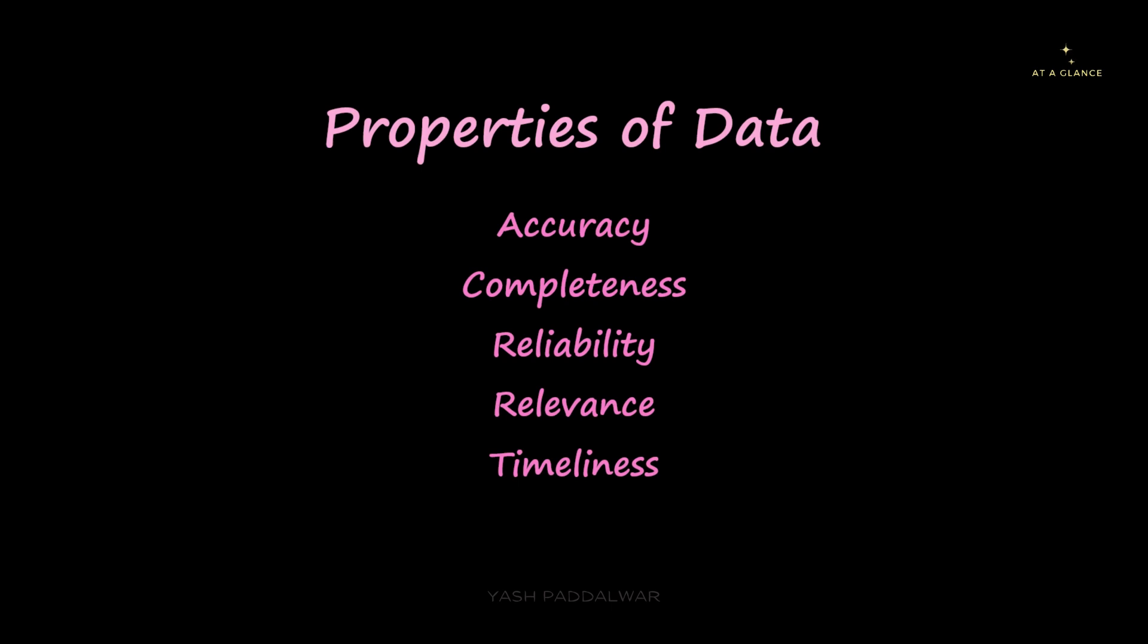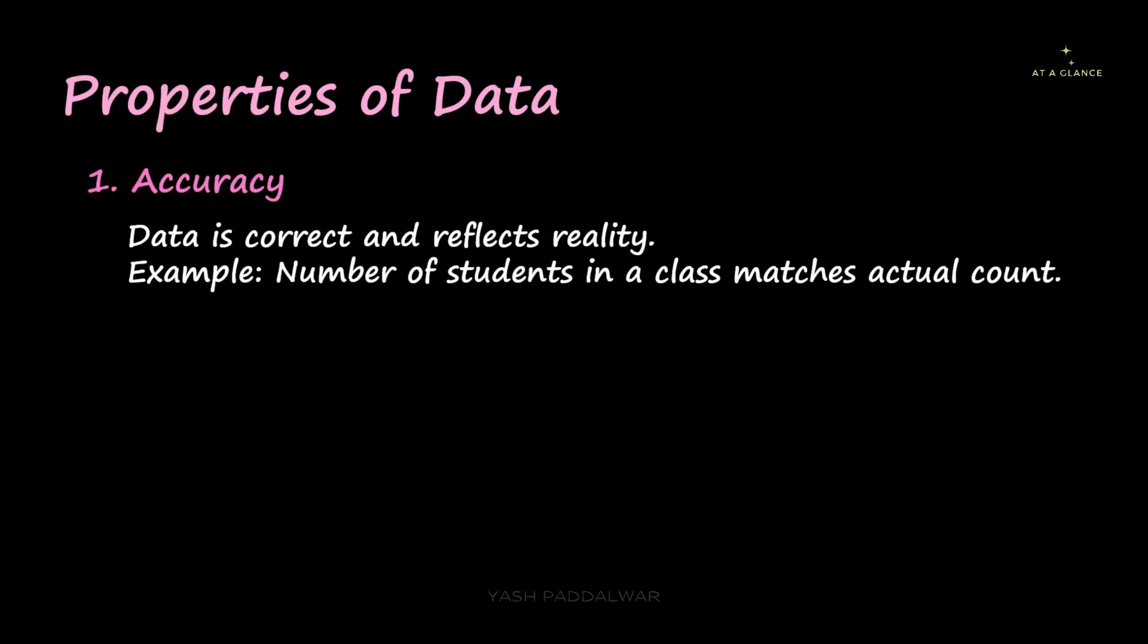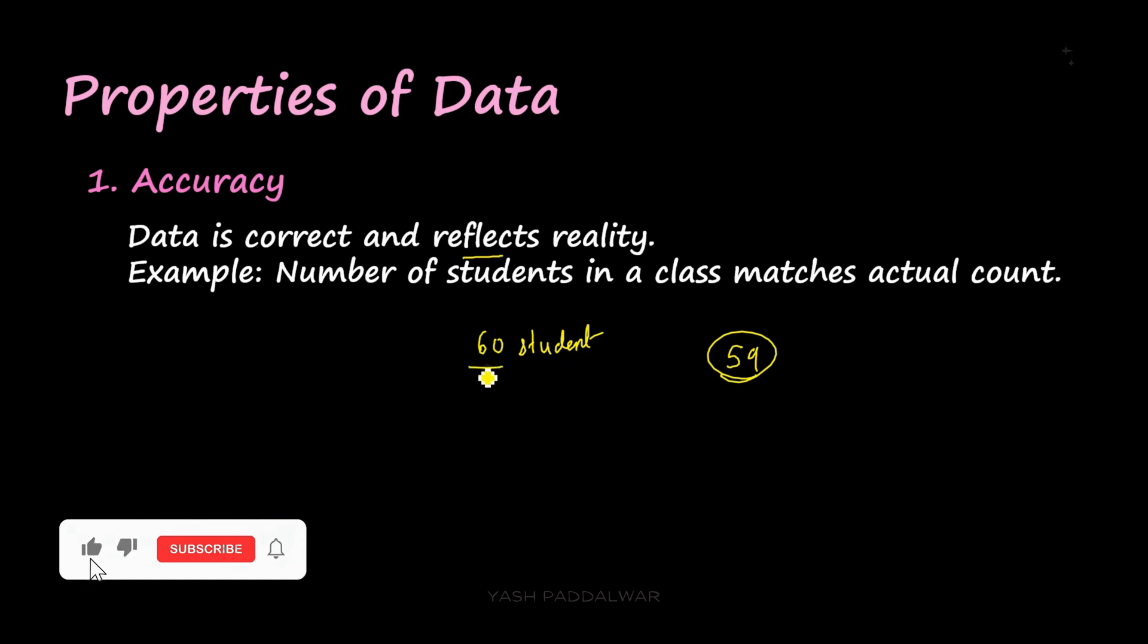Let's have a look at all of them one by one, starting with accuracy. So over here you can see accuracy, the name itself tells the correctness, whether the data is correct and also it reflects reality. For example, number of students in a class matches the actual count. Let's say if a particular class contains 60 students in reality, but after counting the number of students in that particular class we get 59. So in this particular case, the data is approximately equal to each other, but they are not exactly equal. So here, the data cannot be termed as correct.